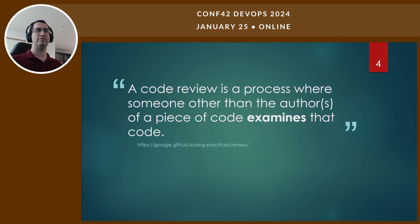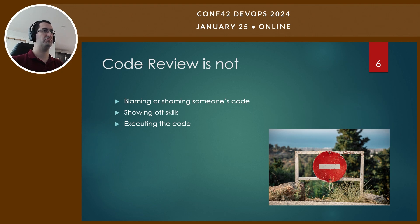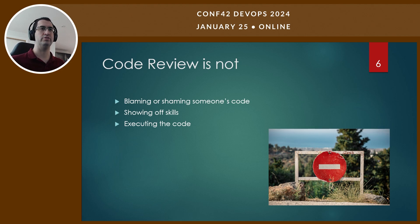Code review — what is it? It's a process that focuses on examining and reading someone's code. There are good references on this. Why do we do code reviews? There are plenty of reasons: to discover bugs earlier, improve code quality, enhance security, share knowledge across the team, mentor newer engineers, maintain compliance, and so on. But also — what is not a code review? It's not blaming or shaming someone's code. It's not an opportunity to show off your amazing engineering skills. And it's not about actually executing the code — it's about reading, analyzing, putting comments, and helping the change get better.